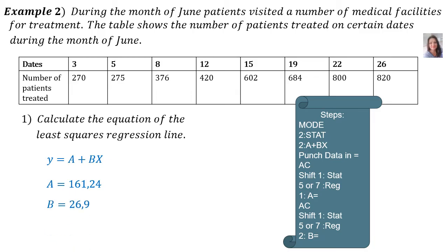Mode. To start. And then you choose number 2, a plus bx. Then we enter the data. I suggest that you pause the video and input your data quickly. Then you press AC. Shift 1, stat. 5 or 7 for regression, depending on your calculator. And then you choose number 1, A equals. And then your answer should be 161.24. AC. Shift 1, stat. Number 5 or 7 for regression. And then 2B equals. And then your B value will be 26.9. Therefore, the equation of the least squares regression line is y equals 161.24 plus 26.9x.